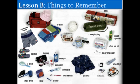Now let's move to Lesson B. In this lesson we will learn some new vocabulary words with pictures to explain their meanings. Number one: swimming trunks. A towel — this is the towel. Sandals — these are sandals. Makeup. A brush.